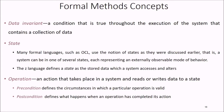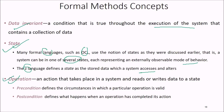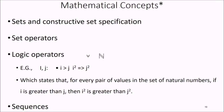Key formal method concepts include data invariance, state, and operation. Data invariance is a condition that is true throughout the execution of a system containing a collection of data. State: many formal languages such as OCL use the notation of states — the system can be in one of several states, each representing an externally observable mode of behavior. The Z language defines a state as the stored data a system would access. An operation is an action that takes place in a system, providing data to a state, and may have preconditions and postconditions.